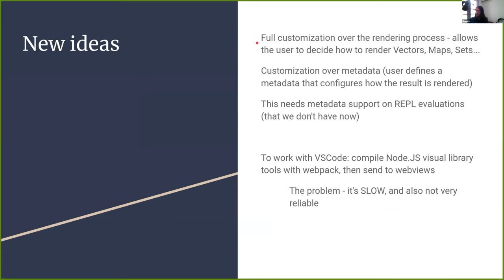So the new idea I came up with is to allow full customization over the rendering process. Right now, as I told you, interactive render is kind of an afterthought. I'm deciding to transform it into first-class, so anyone can decide how they want to render vectors, maps, and sets and everything else. You could assign a function with metadata — for example, I could define a function that I want to render as a chessboard, and Chlorine will automatically discover that and use a chessboard renderer. This will need metadata support on the REPL. We don't have that now. Also remember this is a socket REPL, so there's no nREPL — we don't want to inject things on the class path.